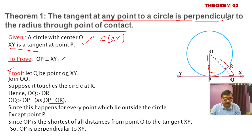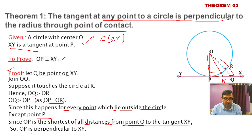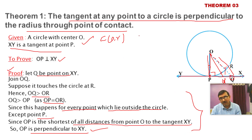Since OP equals OR (the radius), and OQ is greater than OP for every other point Q on XY, OP is the shortest distance from O to line XY. Therefore, OP is perpendicular to XY. This is a 3-mark theorem, no doubt.